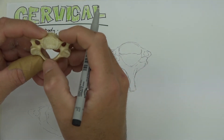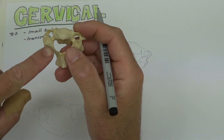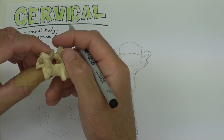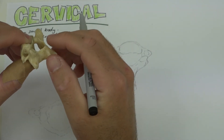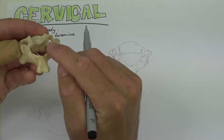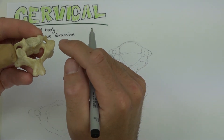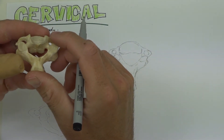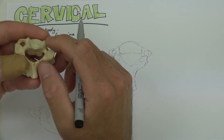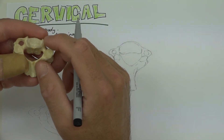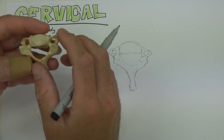The vertebral foramen is quite large in comparison. The articular facets lie on a diagonal — obliquely, but slightly more in the horizontal plane. This orientation allows the neck to move in many directions: we can flex the head bringing the chin towards the chest, extend it towards the sky, rotate right and left, and laterally flex by taking the ear towards the shoulder — all occurring in a gliding type motion.